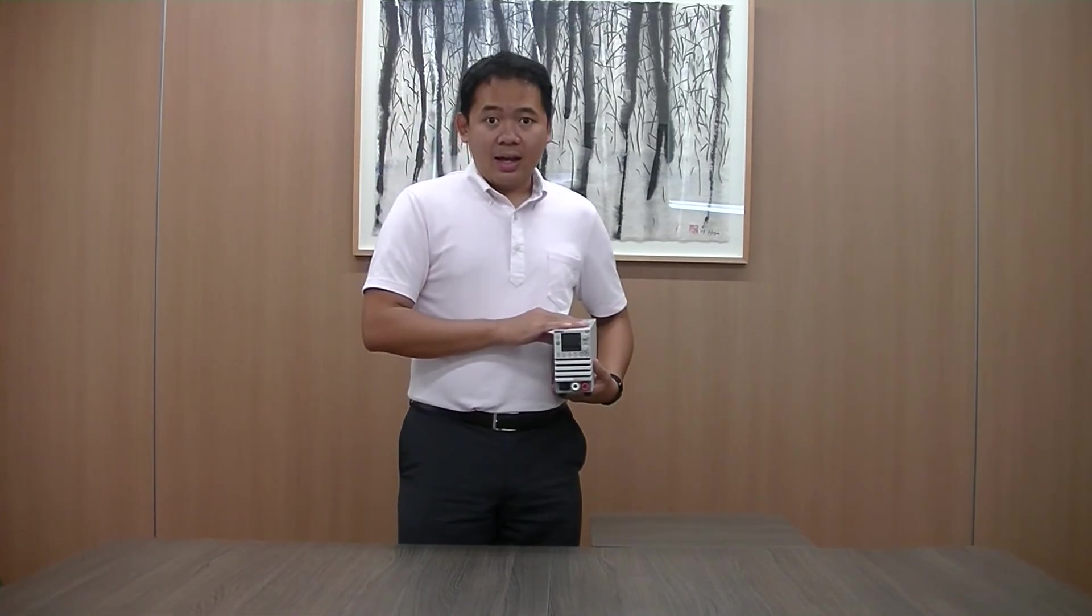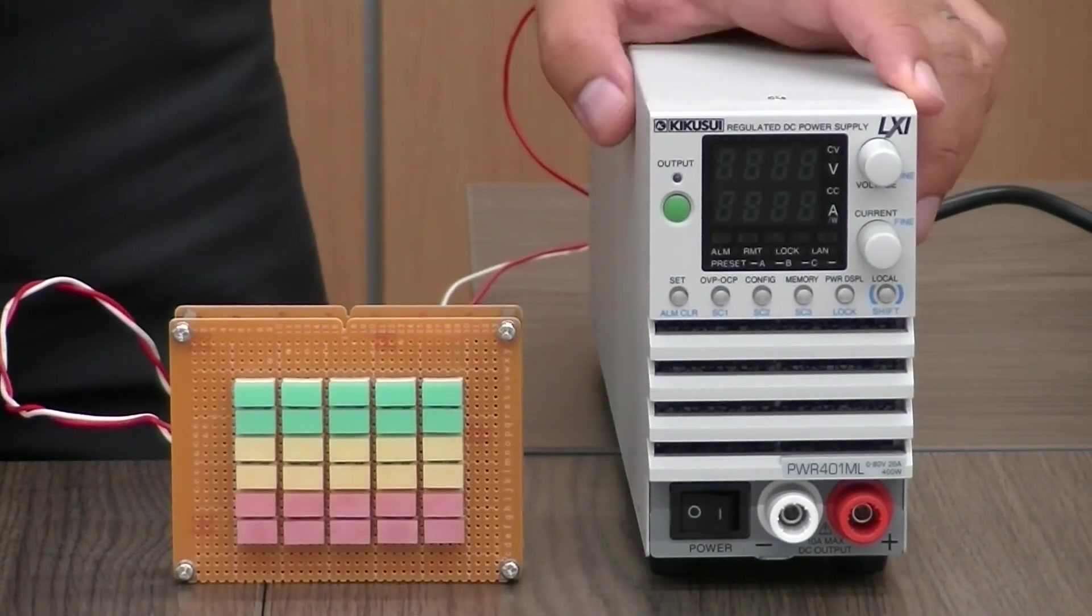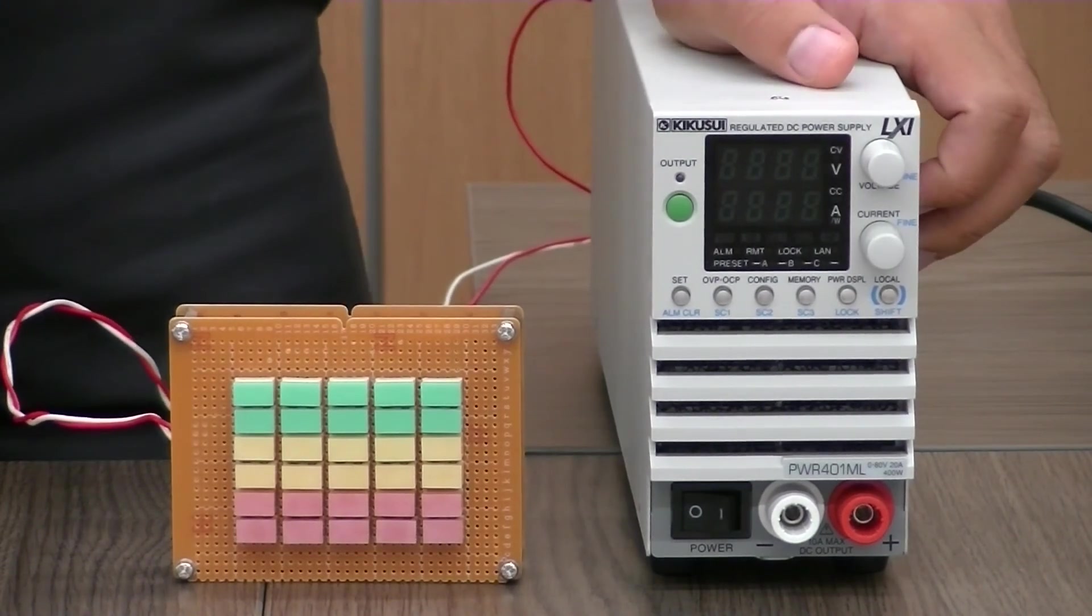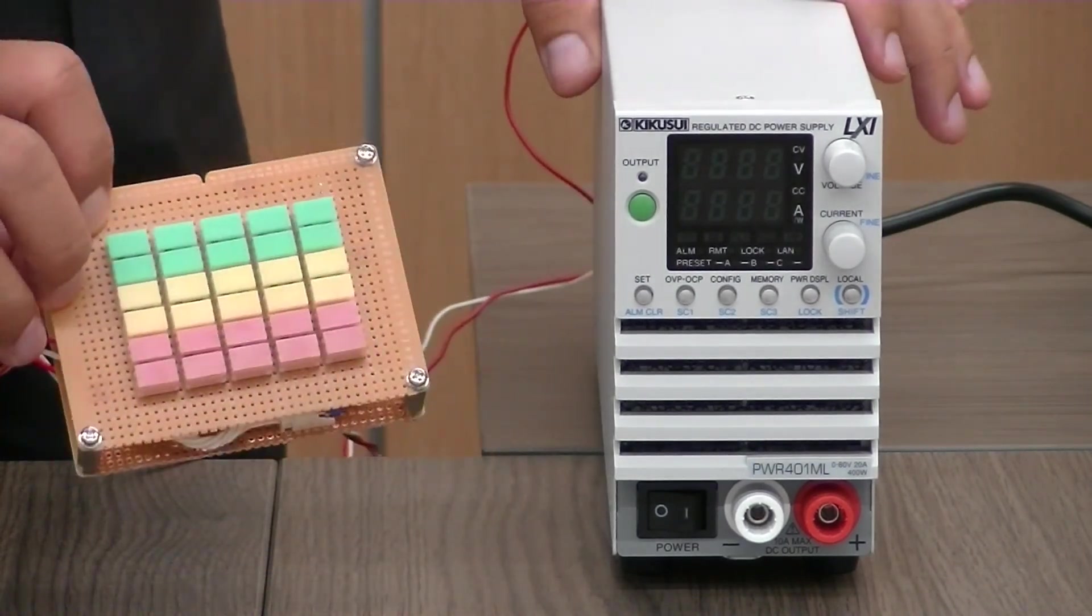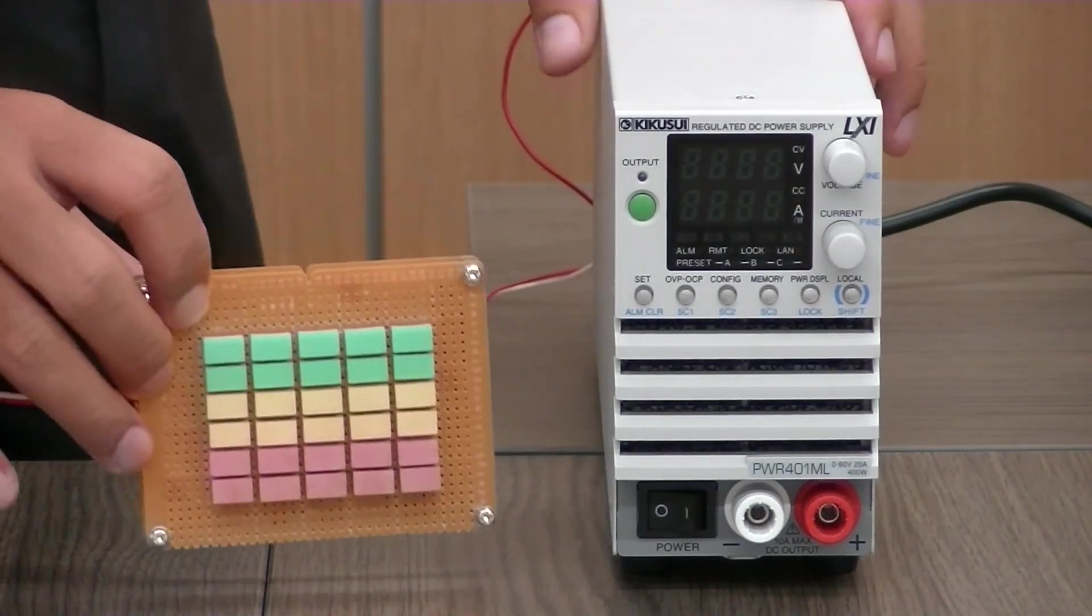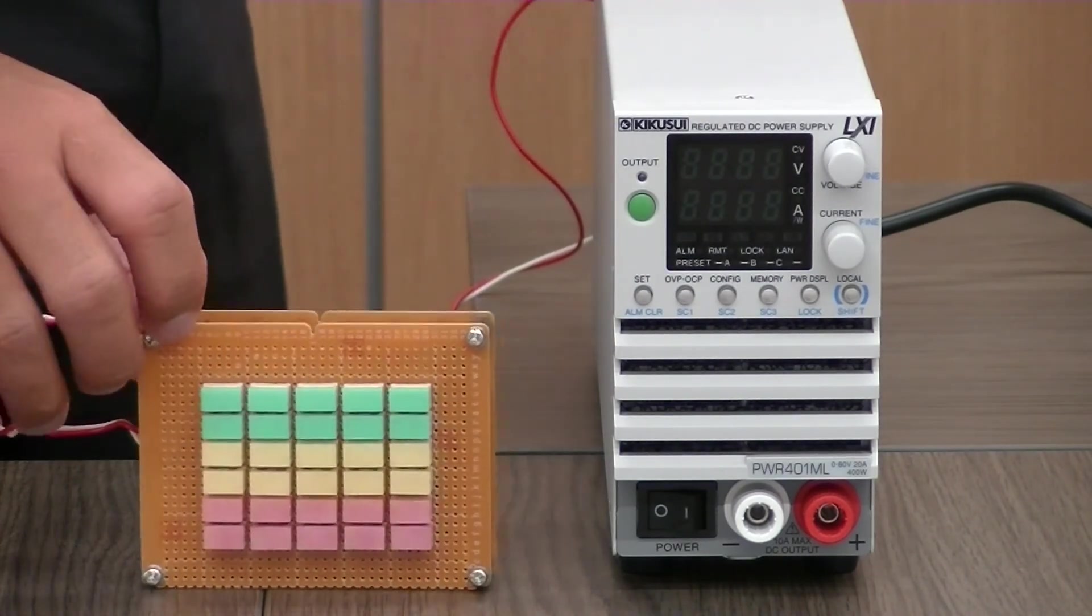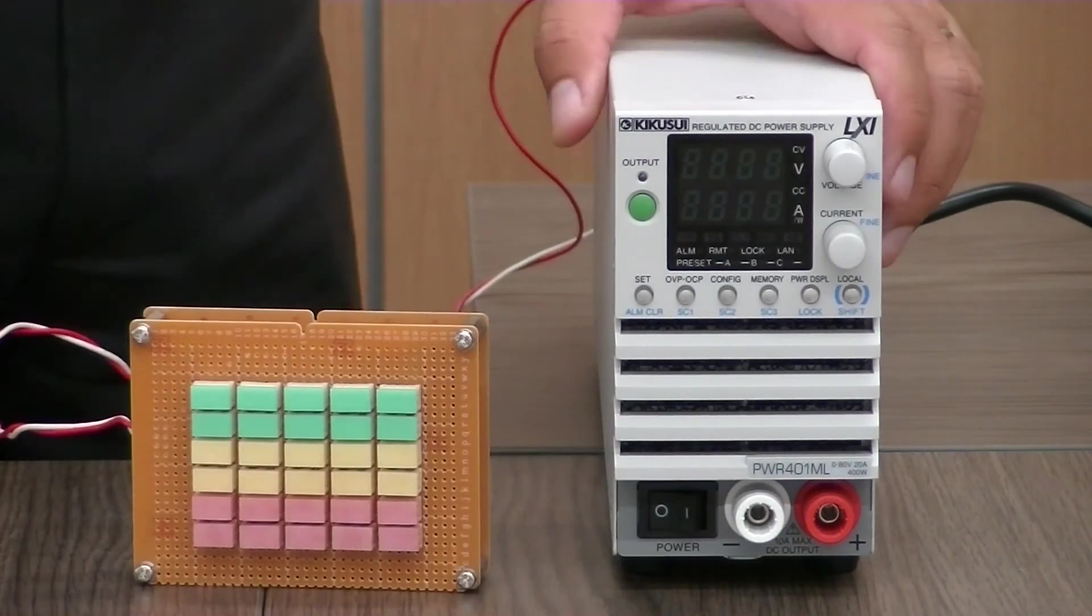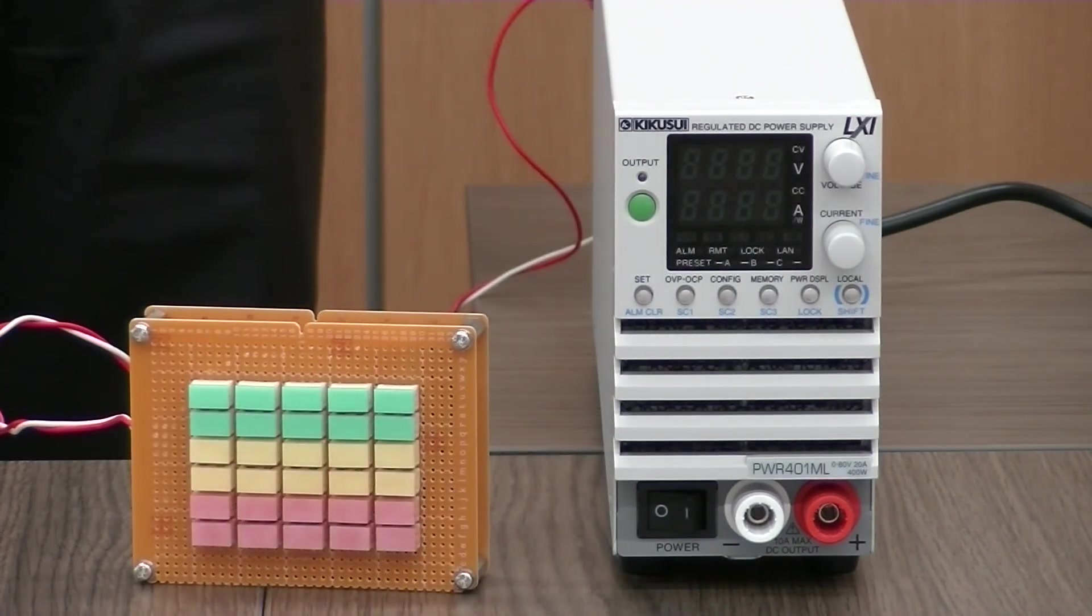So today I would like to show you the basic operating of the PWR01. I'm going to show you how to operate a basic operating for PWR01. In this video I'm going to use an LED and we connect it through the rear output terminal. Even though PWR01 has the front output terminal but this time we're going to use the rear output terminal.